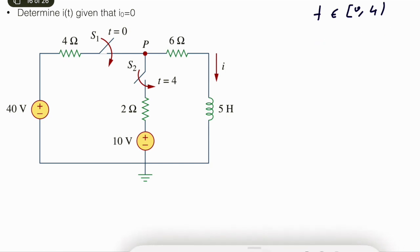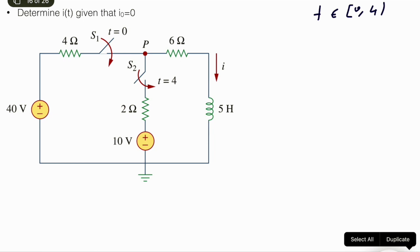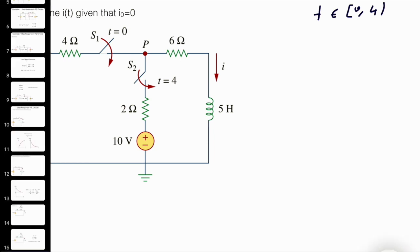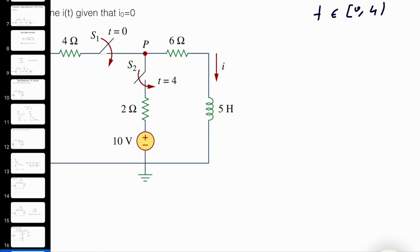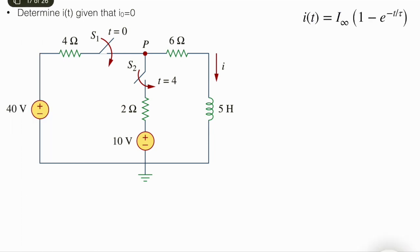Since the initial condition is given and equals 0, we use the formula: i(t) equals i∞ times (1 minus e to the power of minus t divided by tau), where tau is the time constant.